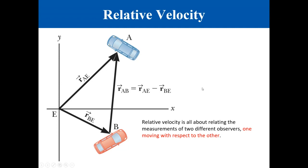If you are interested in the velocity, you divide by delta T all these terms. So you will get another equation for the velocity: VAB as a vector equals VAE minus VBE. This is for the relative motion.